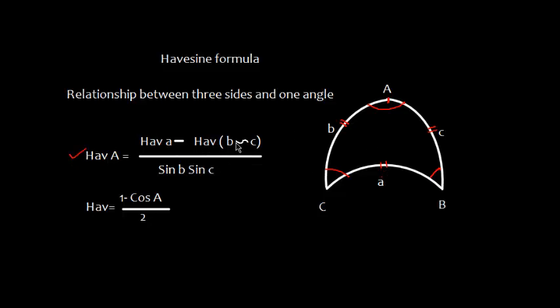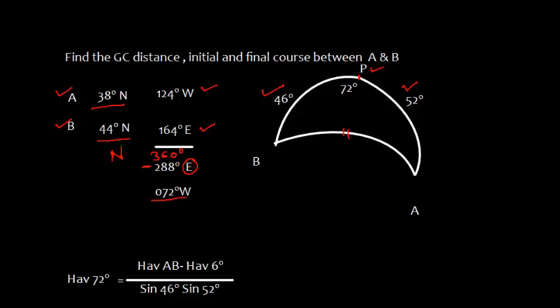So haversine of this angle is haversine of this side minus haversine of difference of adjacent sides, this side B and C, divided by sin B and sin C. And this haversine we can write as 1 minus cos A divided by 2.